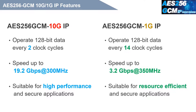The AES-256-GCM 1G IP can operate on 128-bit data every 14 clock cycles, with speeds up to 3.2 Gbps at a maximum frequency of 350 MHz. This IP is suitable for resource-efficient and secure communication applications.